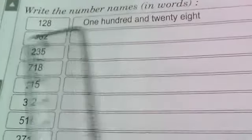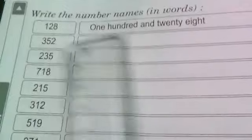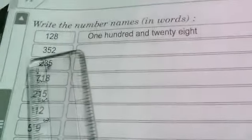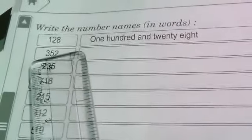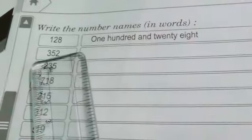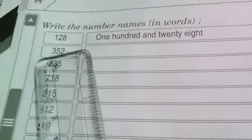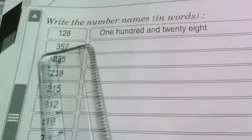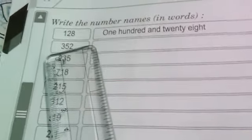128. Next, 352. So first you have to write three hundred and fifty-two. Students, don't forget to write 'and'. Okay. You must write 'and'.